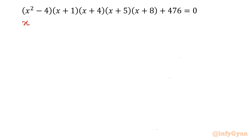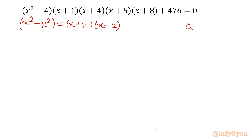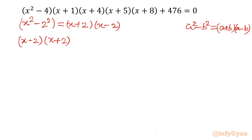As we can see, the first factor is x² - 4, which is a difference of squares. So we can write that bracket as (x + 2)(x - 2) by the difference of squares formula: a² - b² = (a + b)(a - b). So our equation converts into (x - 2)(x + 2)(x + 1)(x + 4)(x + 5)(x + 8) + 476 = 0.